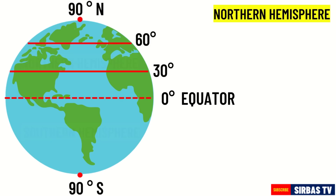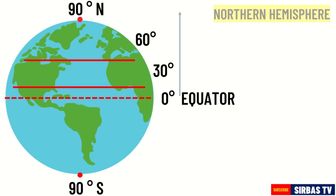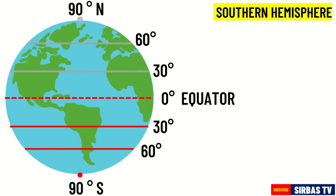The equator divides the Earth into the Northern Hemisphere and the Southern Hemisphere. The Northern Hemisphere is an area located above the equator up to the North Pole. It extends above the equator to 90 degrees going up. On the other hand, the Southern Hemisphere is an area located below the equator down to the South Pole. It extends below the equator to 90 degrees going down.